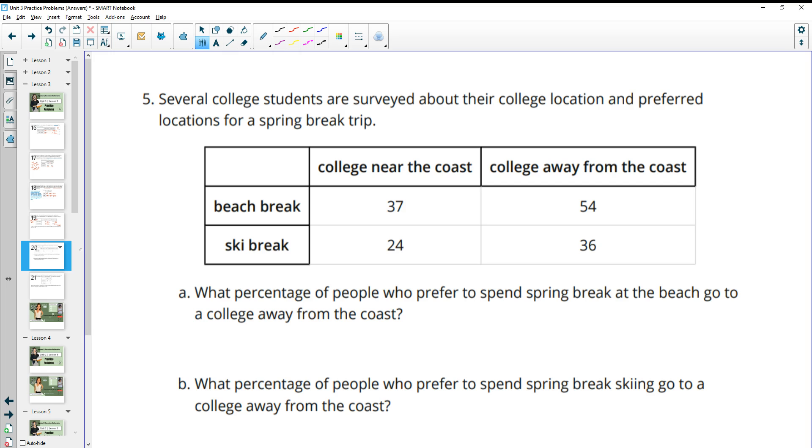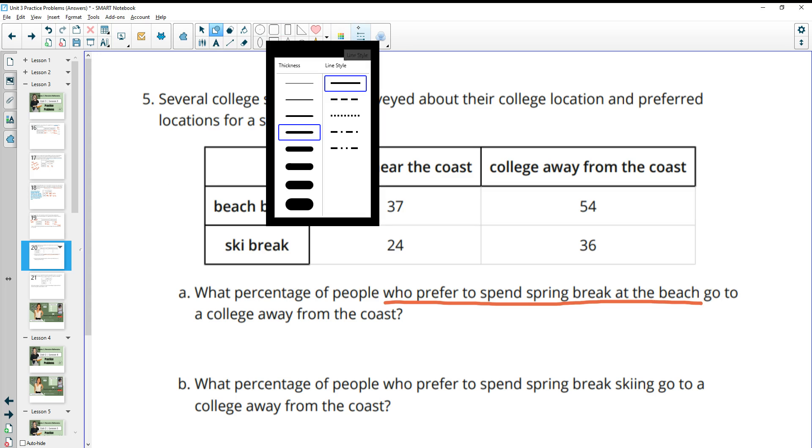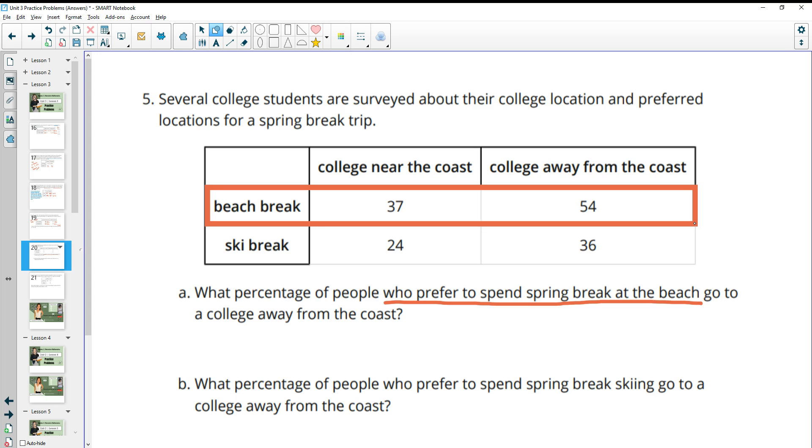Number five, several college students are surveyed about their college location and preferred locations for a spring break trip. What percentage of people who prefer to spend spring break at the beach go to college away from the coast? So now we're looking at only the people who prefer spring break at the beach. So let's isolate that. How many of those people prefer to go to college away from the coast? So college away from the coast is here. So we would do 54 divided by just those people. So divided by 37 plus 54, the total of that, which is going to be 91. So then do 54 divided by 91 and you get 59% for that.